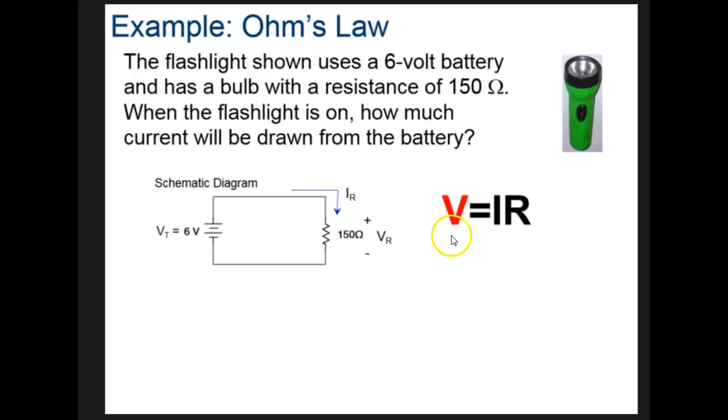So we're going to plug in the things we know. We know six volts, and we know the resistance is 150, so we plug in R and V. And then how do we solve this? Basic algebra problem where we're going to divide by 150 so that we get I by itself.